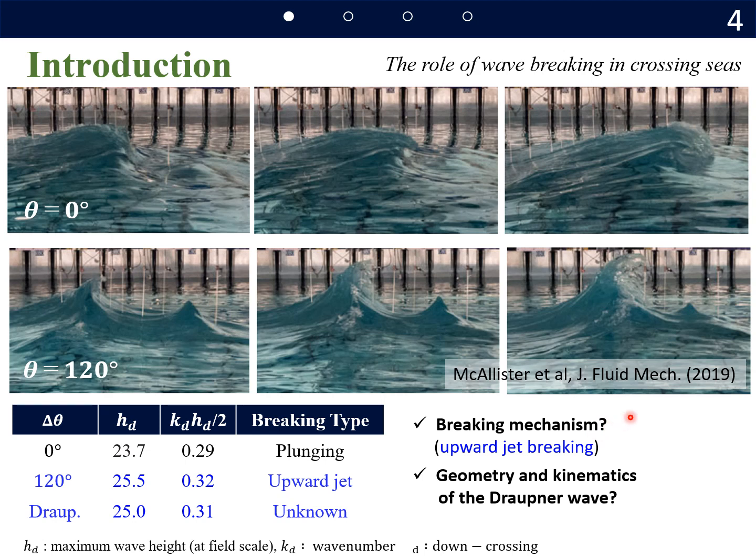Based on these findings, McAllister et al. conducted experimental tests and reproduced the Draupner wave using three different crossing angles delta-theta. As we can see here, in the crossing sea states, measured maximum wave height and wave steepness are smaller than those measured at the Draupner platform.